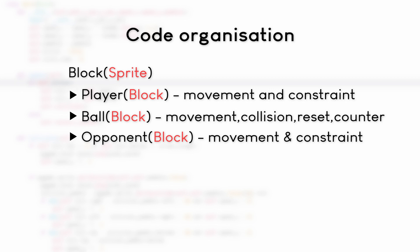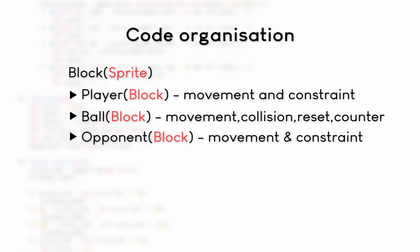The block class just takes a surface, puts a rectangle around it, and places it on the screen. The first major class is the player class — our player paddle that we can control — and it only does two things: it can be moved and has a constraint so that we cannot move it outside of the screen. Then we have our ball class, which is the most complex one, with methods to move the ball, check collisions, reset the ball, and run a restart counter after a score.